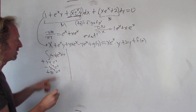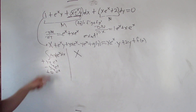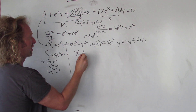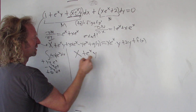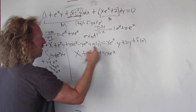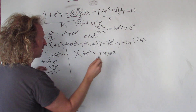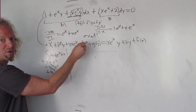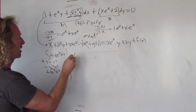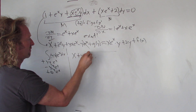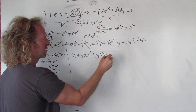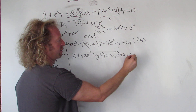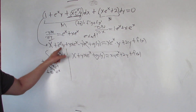Now we use matching to get the answer. Looking at what we got from integrating M with respect to x — actually, I just realized the y·eˣ and −y·eˣ terms cancel! So let me rewrite this: the result simplifies to x + xy·eˣ + 2y + f(x). Those terms cancel, so it's worth noting that simplification before doing matching.